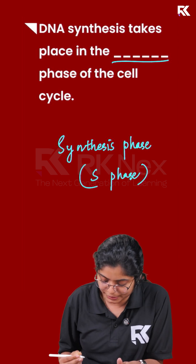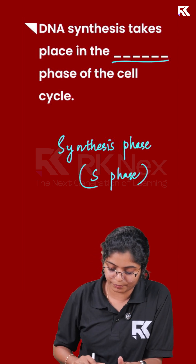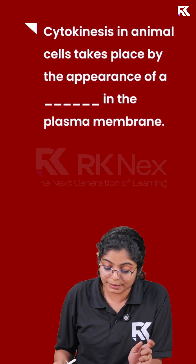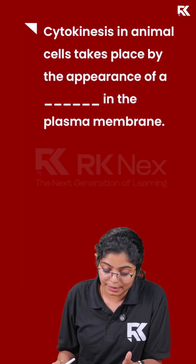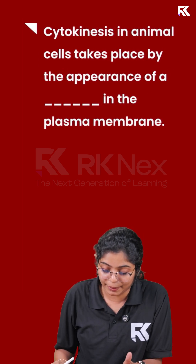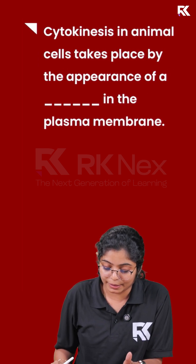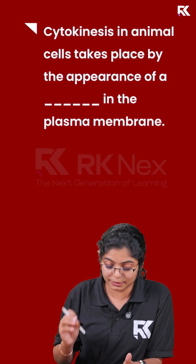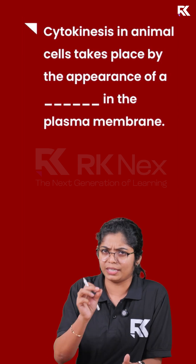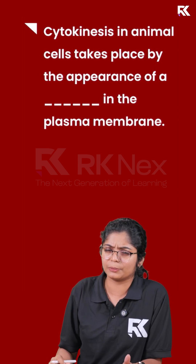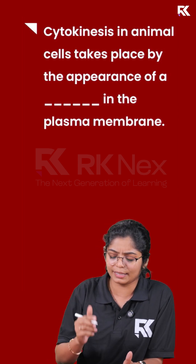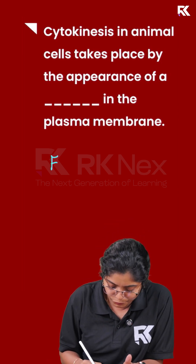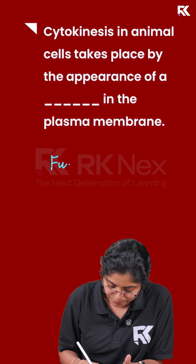And the next question: cytokinesis in animal cells takes place by the appearance of a cleavage furrow in the plasma membrane. Very simple question — the answer is a furrow.